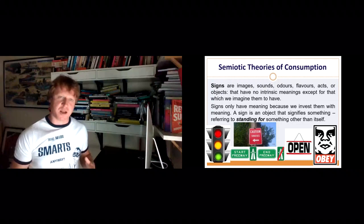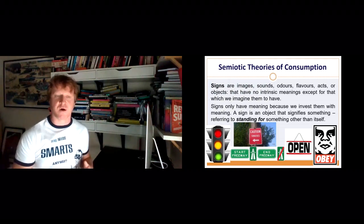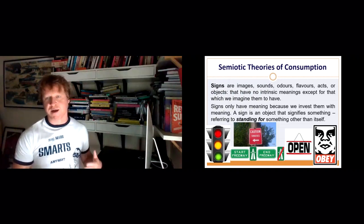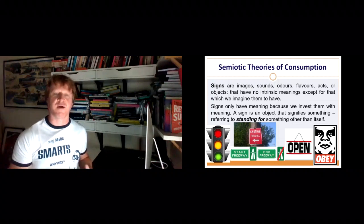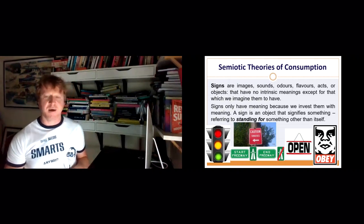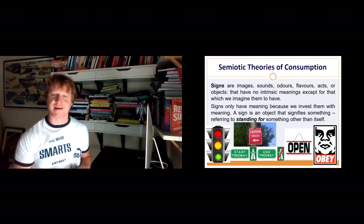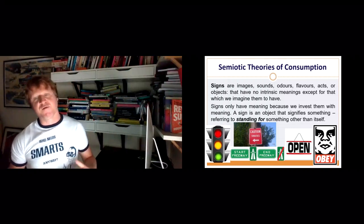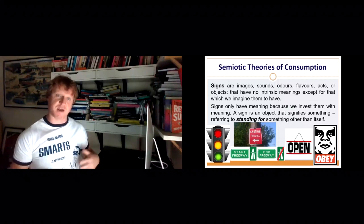So semiotics is a study of signs, but signs here aren't just stop signs or signs on the road. Signs is broadening out here. Signs are all the images, sounds, odours, flavours, acts, texts, objects, these things that have no intrinsic meaning except for that which we imagine them to have. We can do a semiotic analysis of signs, like think of the traffic light. It's a thing that allows us to stop and go, but why is red for stop and green for go? Where does this come from? What are the histories and associations that lead us to totally now associate red with stop in that situation?